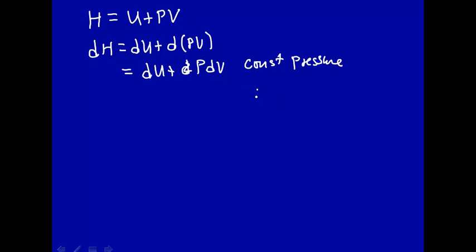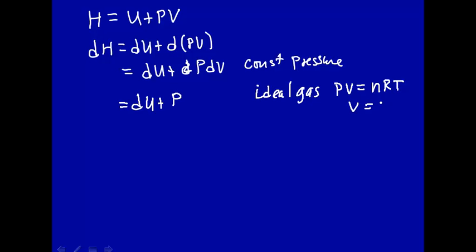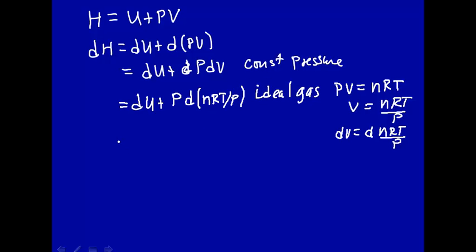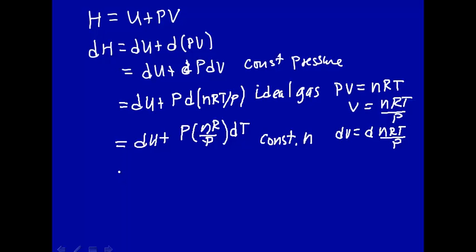Now we're going to make the assumption that we have an ideal gas, and the equation of state for an ideal gas is PV equals nRT. So we can substitute: V equals nRT over p, so dV equals d(nRT/p). At constant pressure, constant n, nR can be pulled out and p cancels, giving dH equal to dU plus p times (nR over p) dT, which simplifies to dU plus nR·dT.